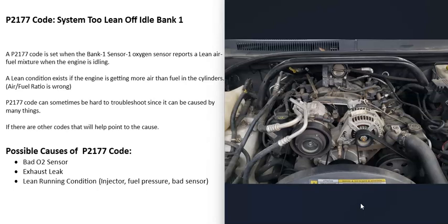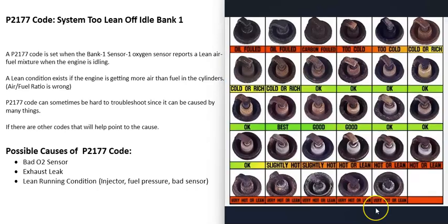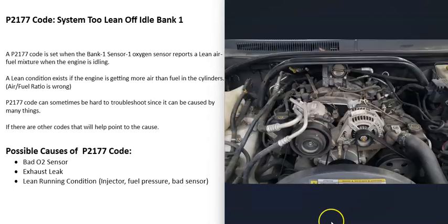If you're not getting any other codes or are having trouble figuring out which cylinders are running lean, you can remove the spark plugs one at a time and check how the tip is burning. Match them to a spark plug burn chart to see if one or more cylinders is running lean, since you can check how the cylinder is burning by checking how the spark plug is burning.